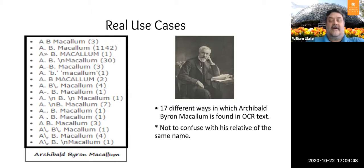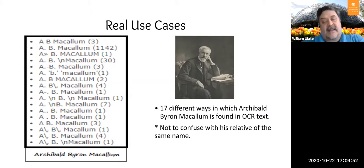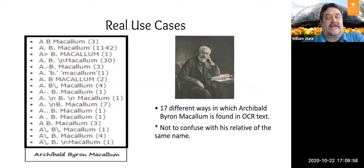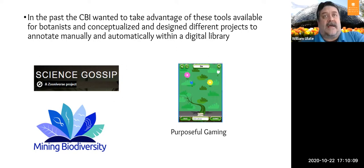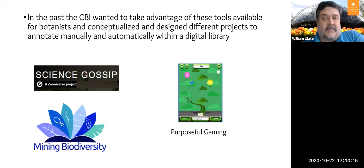There's another example: the 17 different ways in which the name of Archibald Byron McCallum is found in the OCR text of BHL. I always use this example because there's even a relative of him with the same name, and you shouldn't confuse that. Using many of the things that have been mentioned here — identification and the work that colleagues are doing — should help deal with this kind of problem.